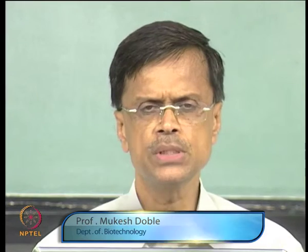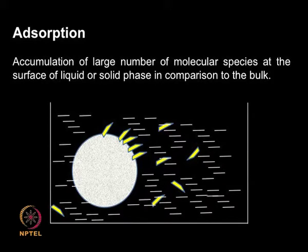Today, we are going to start a new topic called adsorption. Adsorption is used in the early stage of downstream processing. It can be used for recovery of desired products, or sometimes to remove unwanted products. If there are impurities present in your broth which may hinder remaining downstream processing, we may resort to adsorption to remove that particular unwanted product.